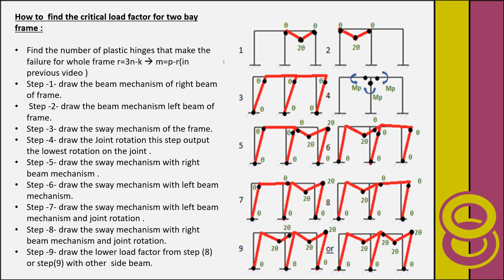Then we draw the beam mechanism for the left beam of the frame. Steps one and two occur due to vertical loads. Step three is to draw the sway mechanism of the frame, which occurs due to the horizontal load. Then step four is the joint rotation mechanism. When we combine the beam and sway mechanisms with the joint rotation mechanism, we call it an elementary mechanism. Joint rotation mechanism can form at any joint that contains three or more members meeting at that joint.